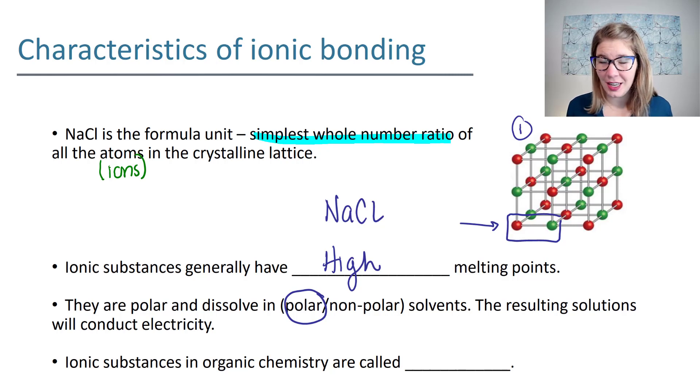After they dissolve in water what ends up happening is they create a solution that can conduct electricity. Now here is how little organic chemists care about these compounds. In organic chemistry every ionic compound is called a salt. It doesn't matter if it's sodium chloride or not, whenever we make a compound at the end that's a byproduct and it's ionic we just call it a salt.